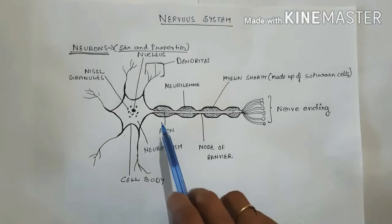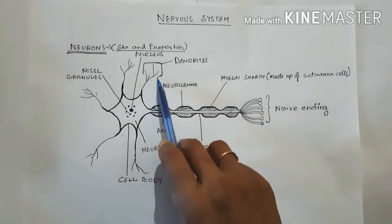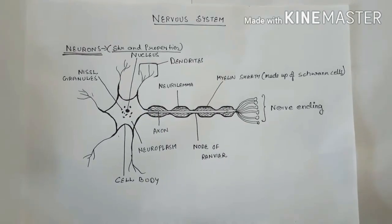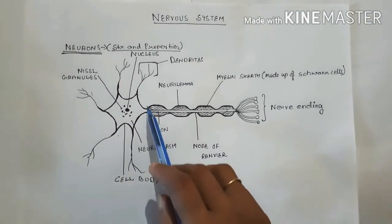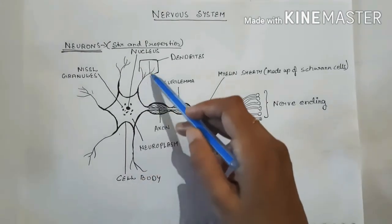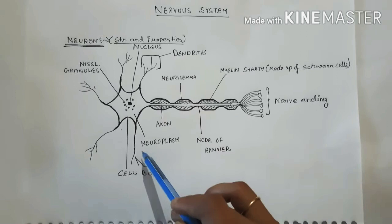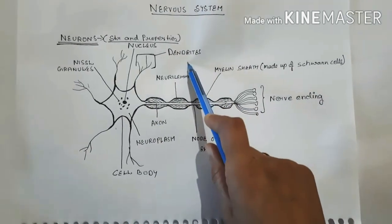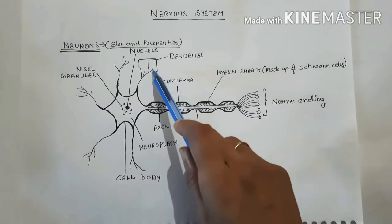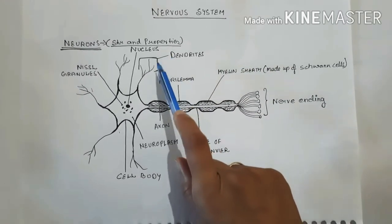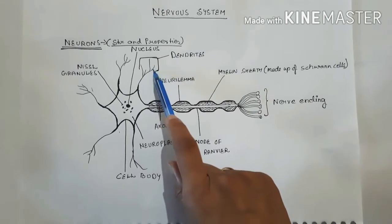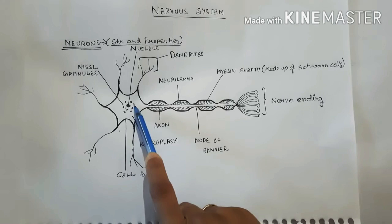The next part of the neuron is dendrites or dendrons. These are short processes or extensions arising from the cytone or cell body. Their function is to receive all information from the outside — any stimulus or any changes — and transmit that information towards the cell body.